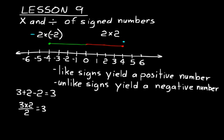Addition will undo subtraction or vice versa, and multiplication will undo division or vice versa. In division, a positive divided by a positive — like signs — yields a positive result. A positive divided by a negative, or a negative divided by a positive — unlike signs — yield a negative result. And negative divided by negative also yields a positive result because those are like signs.